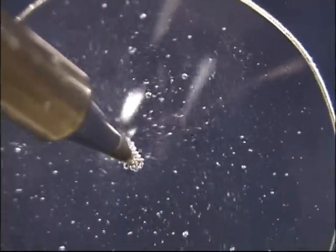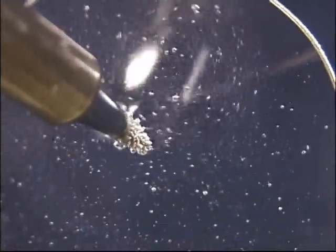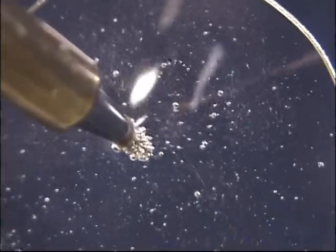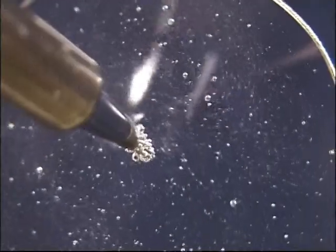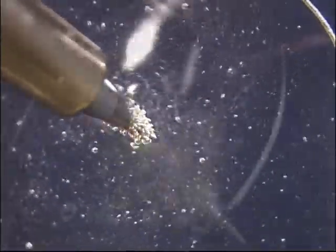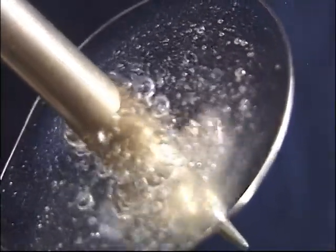Bubbles will form on the tip of the soldering iron and they will be whisked away by this convection and leave a free surface for more water to be in contact with the tip and make more bubbles.